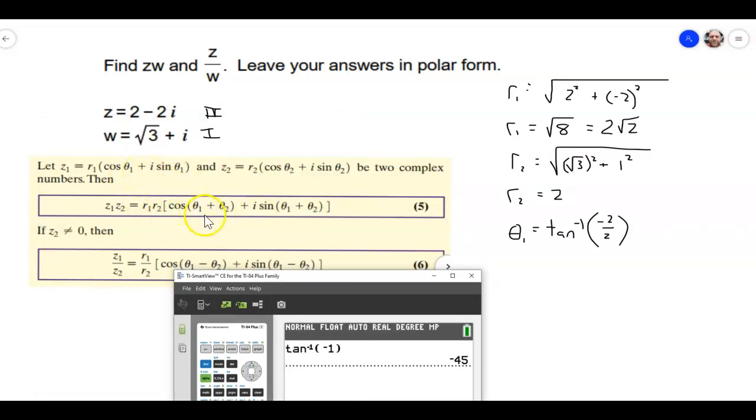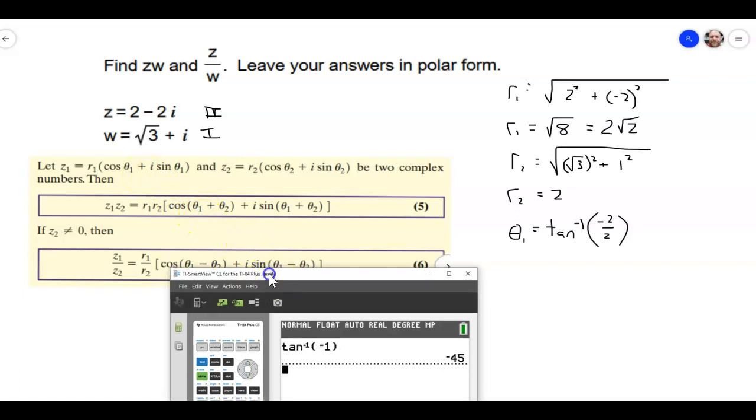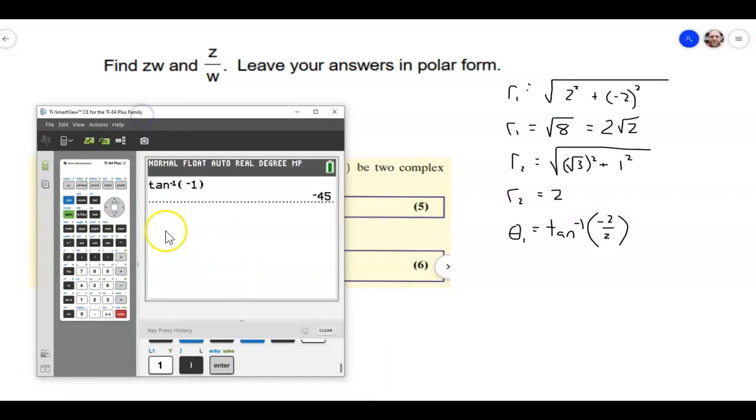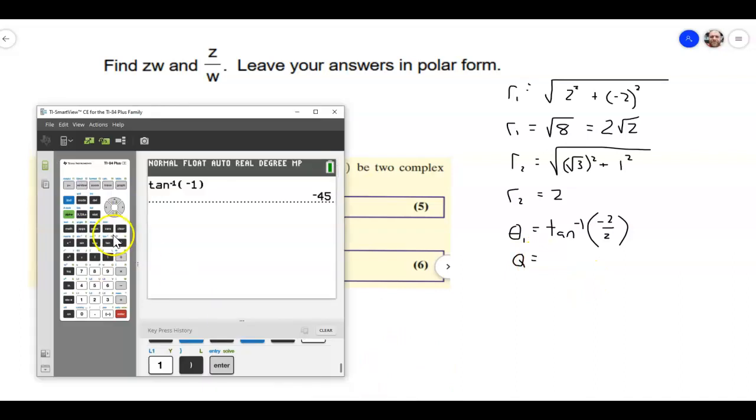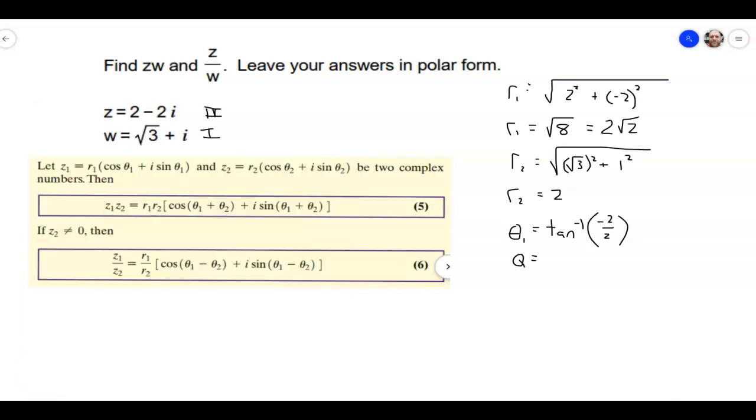And let's see, do they want this in degrees or radians? I think they want this one in degrees, although I think it says in the thing. So I'm going to leave that as is equal to negative 45. But I'll go ahead and put that in standard form so I can add 360 to it. And that is going to be 315 degrees.